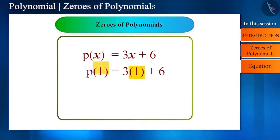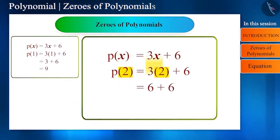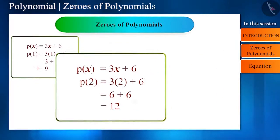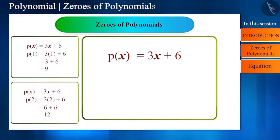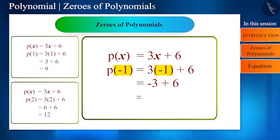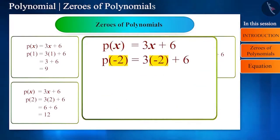Let's put different numbers in the first polynomial. By putting one we get nine, and we get twelve on putting two. By increasing the number, the value of polynomial is also increasing. So let's put a number smaller than one. On putting minus one we get three—values are decreasing. Now let's put minus two. By putting this value we get zero. That is, minus two is a zero of the polynomial 3x + 6.